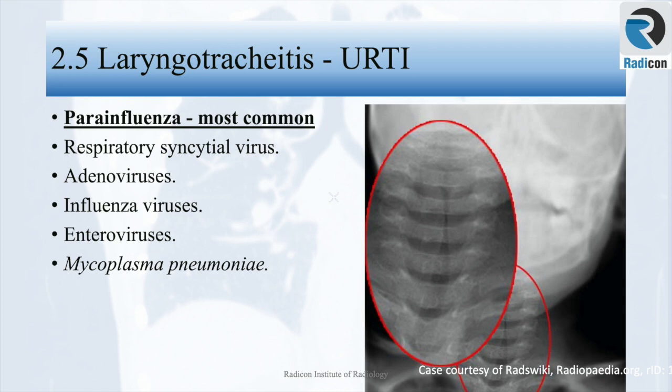Parainfluenza viruses are the most common pathogen in laryngotracheitis or croup. The steeple sign is a radiological sign found on an AP radiograph where infection and mucosal edema in the subglottic trachea results in luminal narrowing that appears like a church steeple. The above radiograph shows a steeple sign of croup and is a clinical emergency.